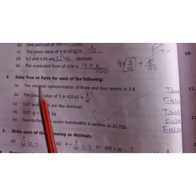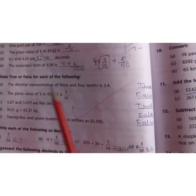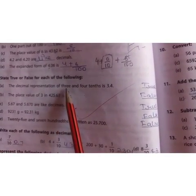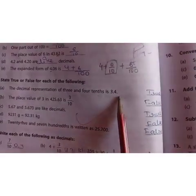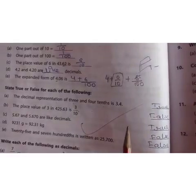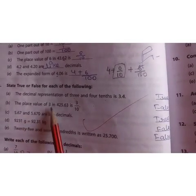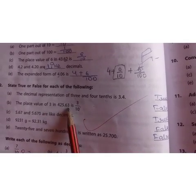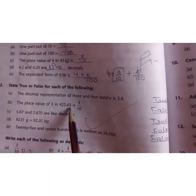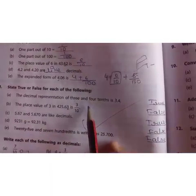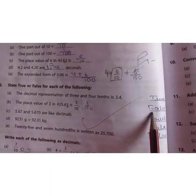Next we have state true or false for each of the following. The decimal representation of 3 and 4 tenths is 3.4. Is it true? Yes, it is true. Next we have the place value of 3 in 425.63 is 3 upon 10. Is it true? No, the place value of 3 is in 100th place. So its place value will be 3 upon 100. So hence it is false.